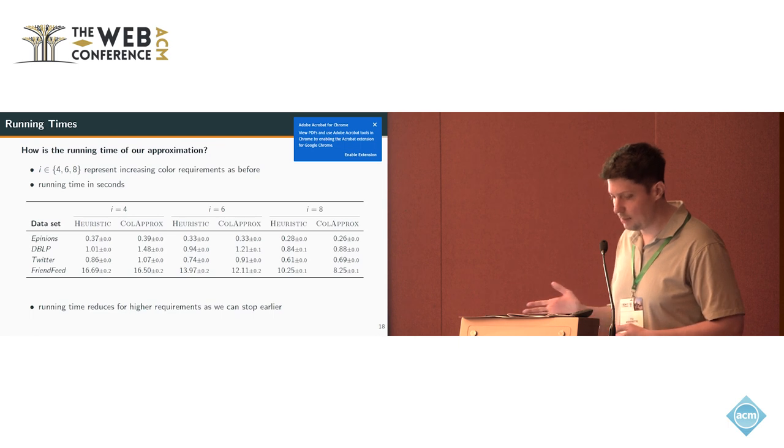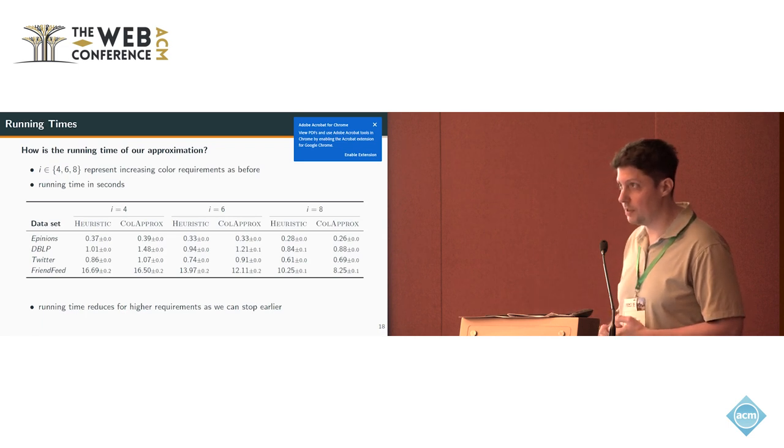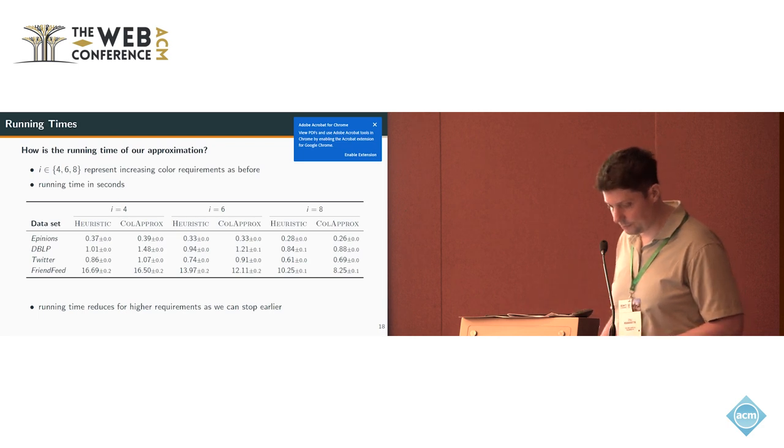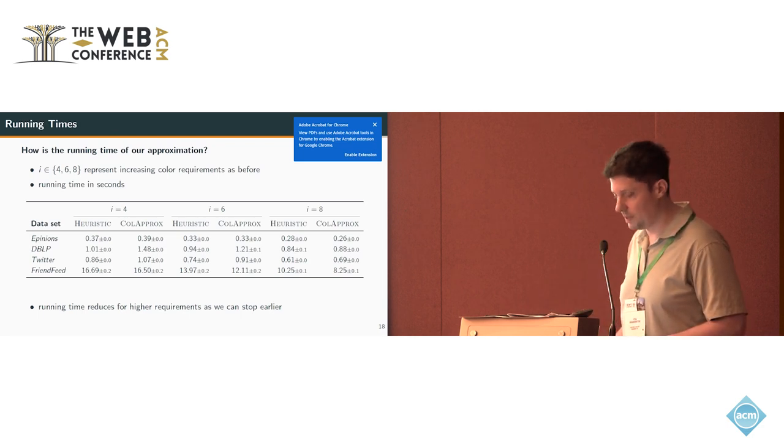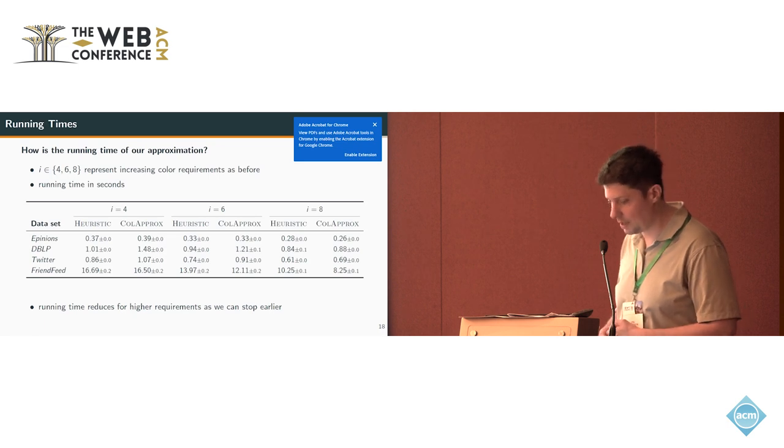The running time is similar to the general densest subgraph and reduces for higher color requirements, because the subroutine where we need to find at least H edges can stop earlier, because the sum of required edges depends on the color requirements.